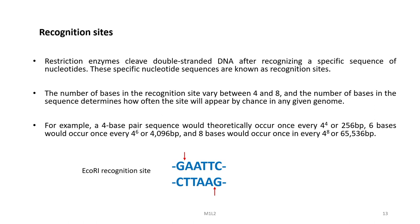Now let us discuss what we mean by recognition sites. Restriction enzymes cleave double-stranded DNA after recognizing a specific sequence of nucleotides — these are called recognition sites. The number of bases in the recognition sites varies between 4 and 8, and the number of bases determines how often the site will appear by chance in any given genome. For example, a 4-base sequence would theoretically occur every 4^4 bases, a 6-base sequence every 4^6, and an 8-base sequence every 4^8 base pairs.